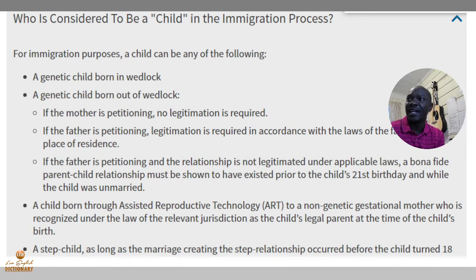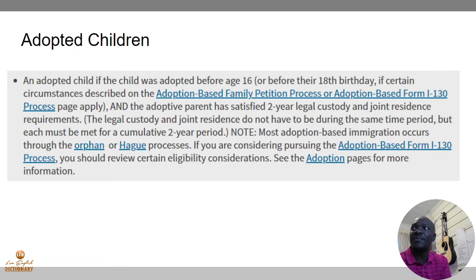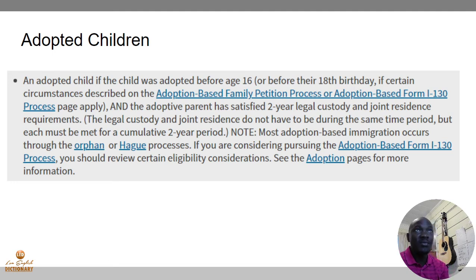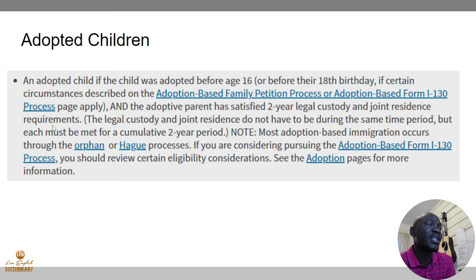That is how you define a child. Now there's one more definition that is very crucial: an adopted child. How does the U.S. talk about adopted children? An adopted child qualifies if the child was adopted before the age of 16, or before their 18th birthday if certain circumstances prescribed in the adoption-based family petition process or adoption-based Form I-130 process apply.